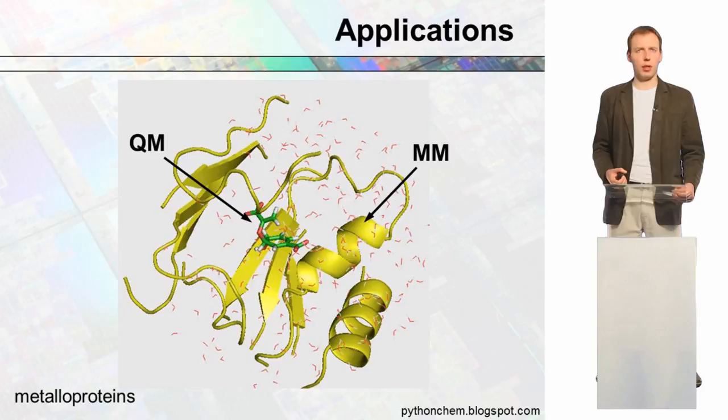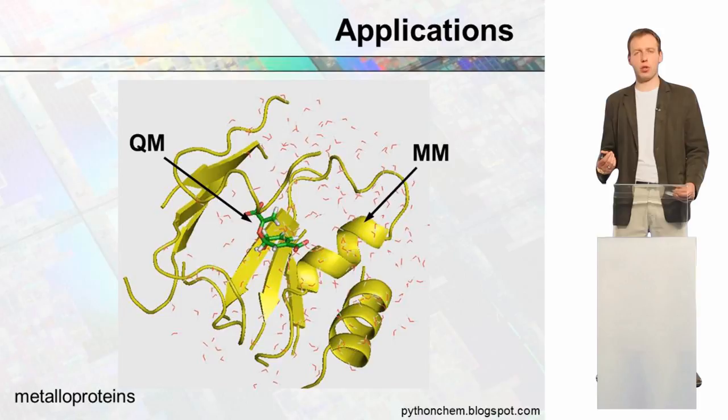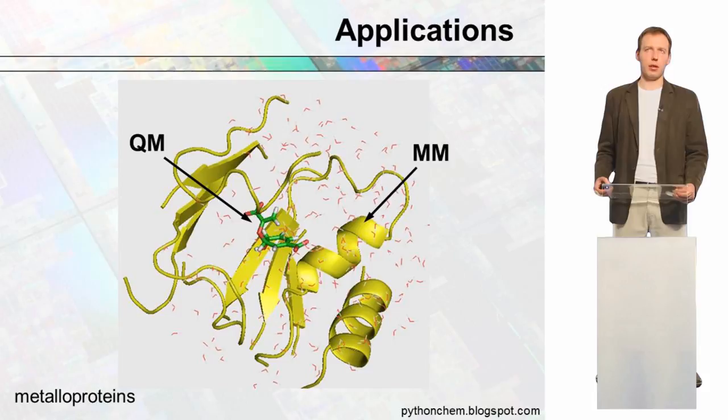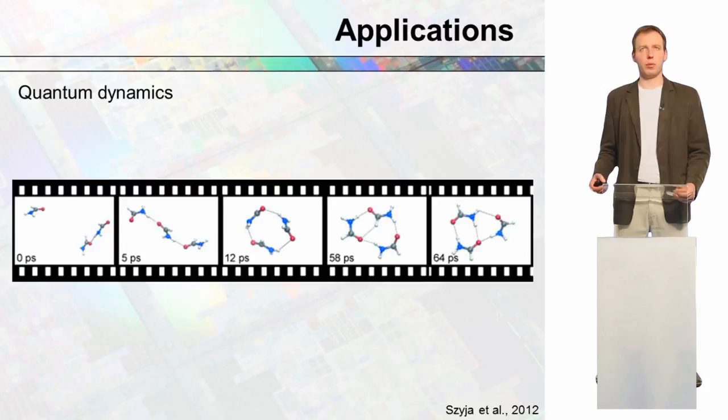In more biological approaches, we can use the quantum approach to describe the active center of metal-containing proteins, and use a less computationally demanding approach to describe the other parts of the protein. We can also perform quantum dynamics — the study of the evolution of a system in time.